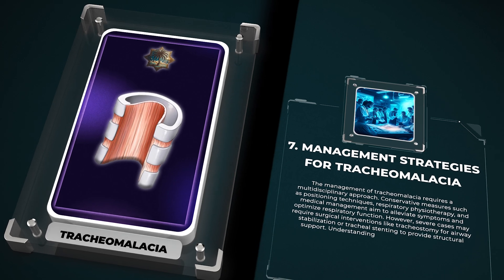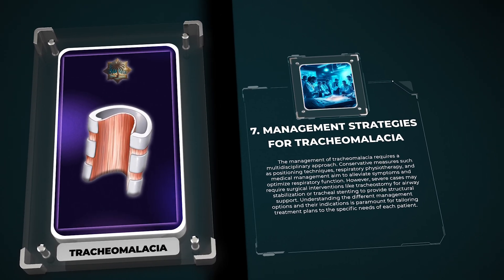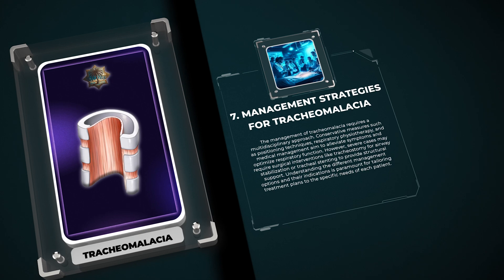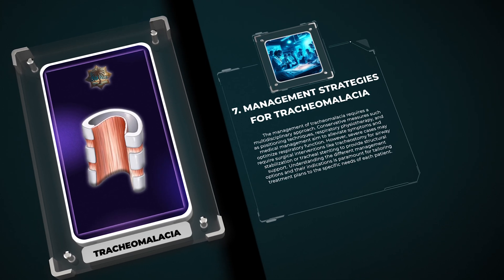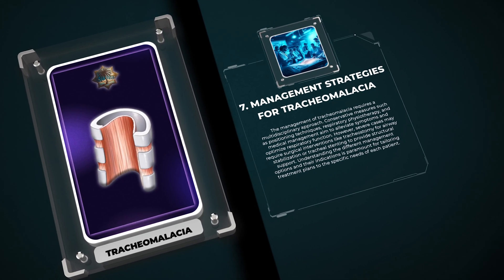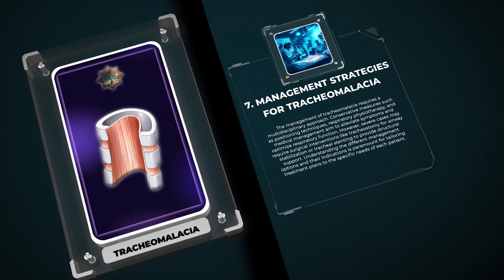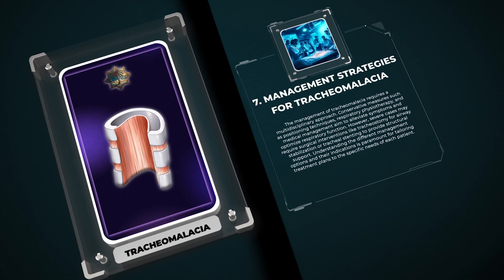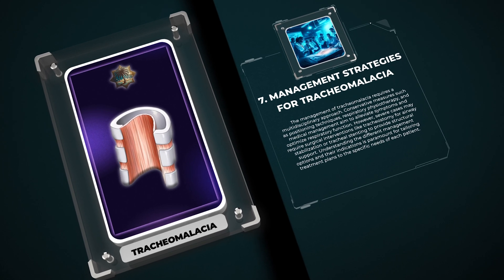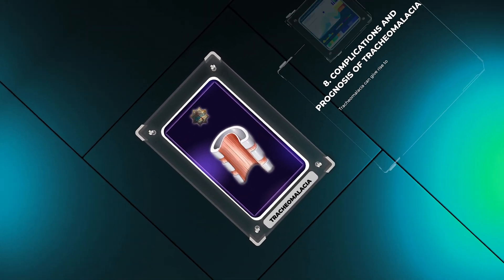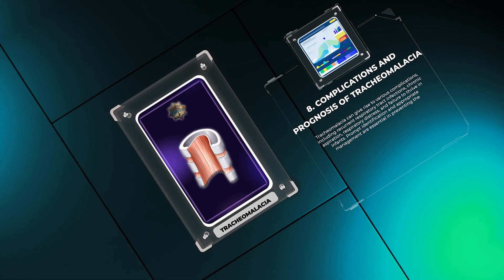The management of tracheomalacia requires a multidisciplinary approach. Conservative measures such as positioning techniques, respiratory physiotherapy, and medical management aim to alleviate symptoms and optimize respiratory function. However, severe cases may require surgical interventions like tracheostomy for airway stabilization or tracheal stenting to provide structural support. Understanding the different management options and their indications is paramount for tailoring treatment plans to each patient.